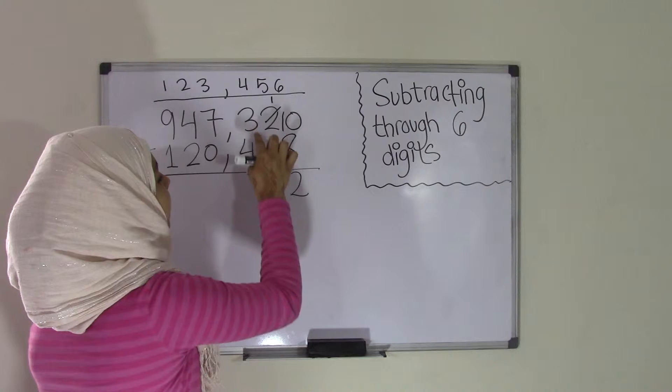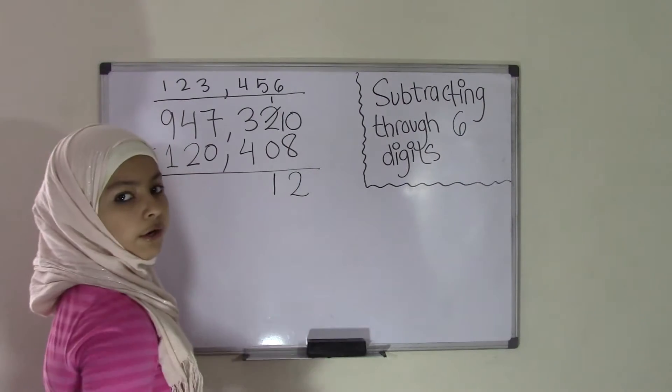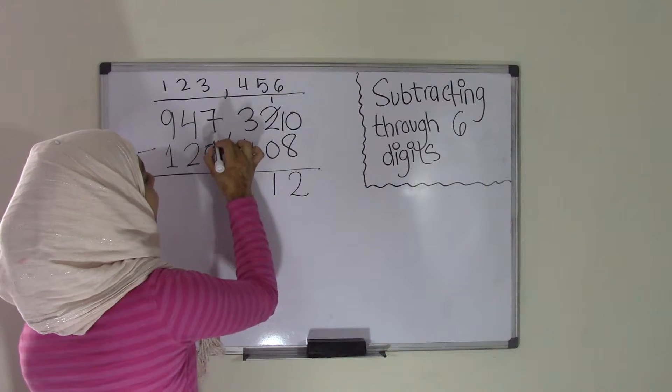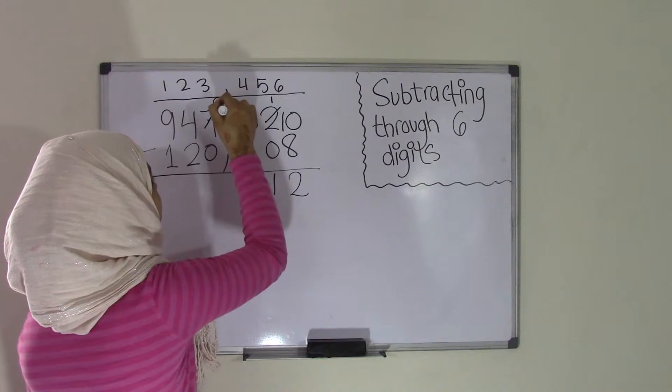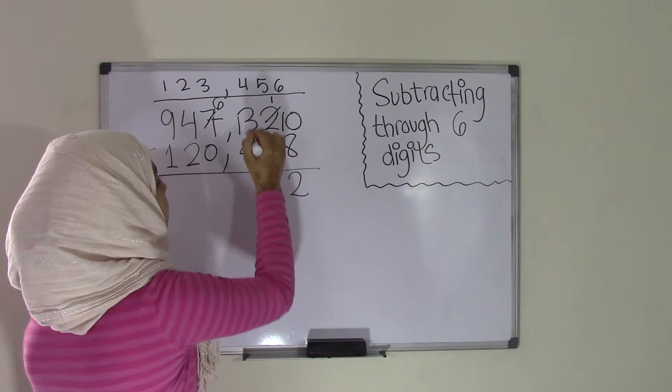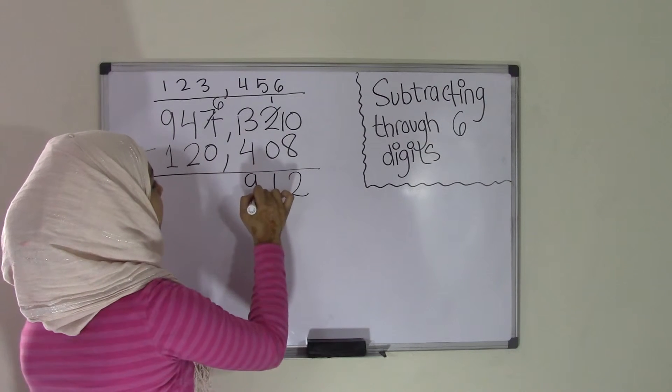Now we have 3 minus 4. We can't subtract 4 from 3, so we'll have to borrow it once again. We're going to borrow 1 from 7 to make this a 13. And since we borrowed 1, the 7 now becomes a 6. We know that 4 subtracted from 13 equals 9. So we bring down the 9.